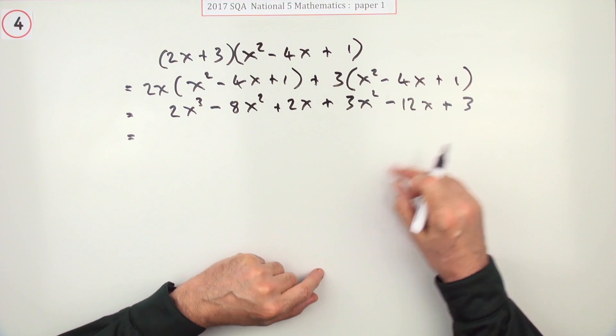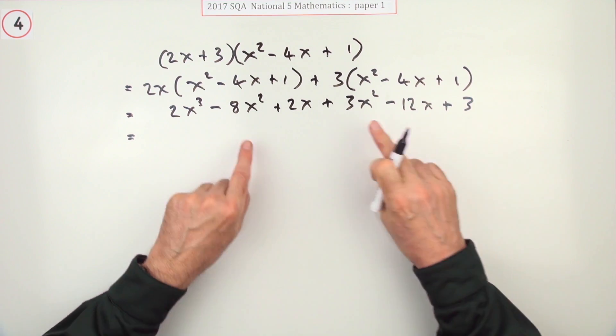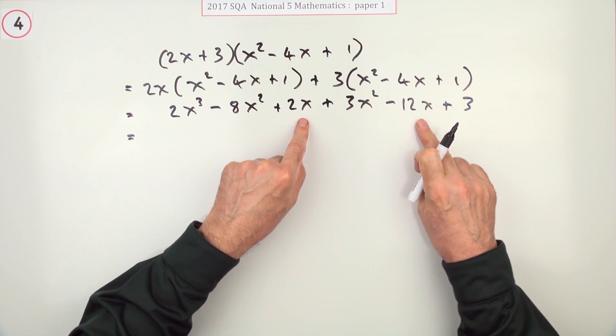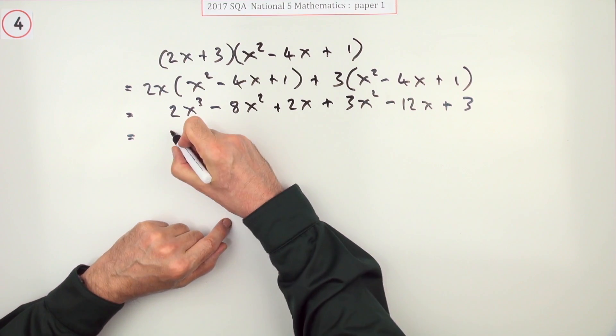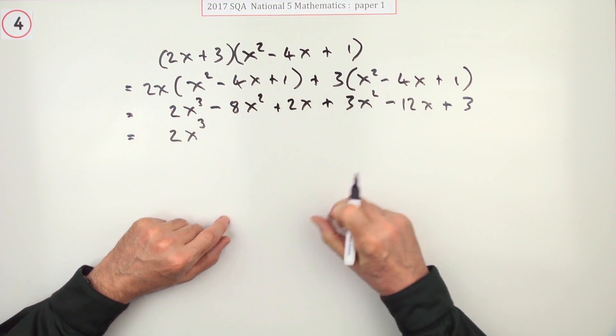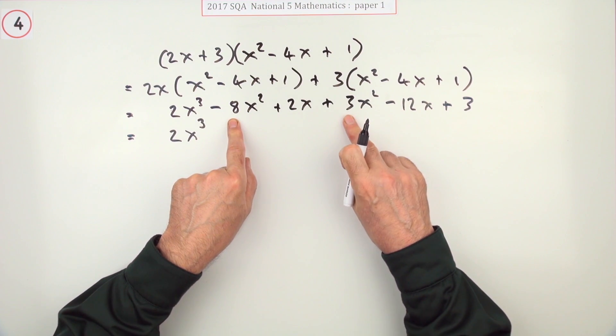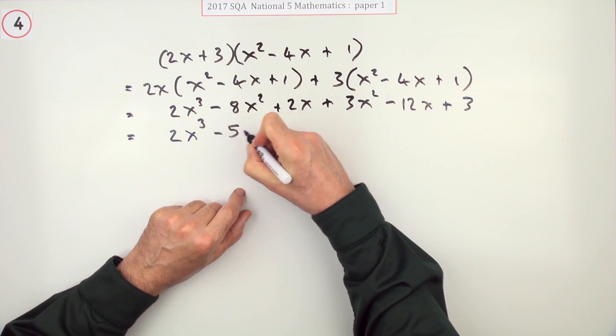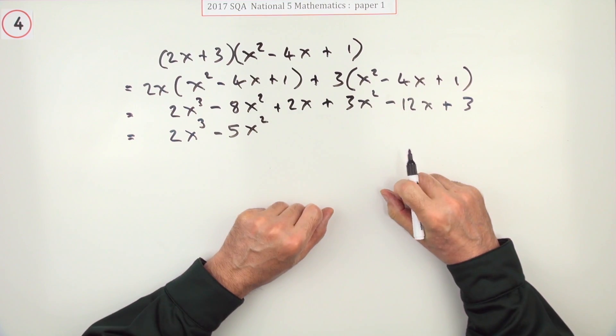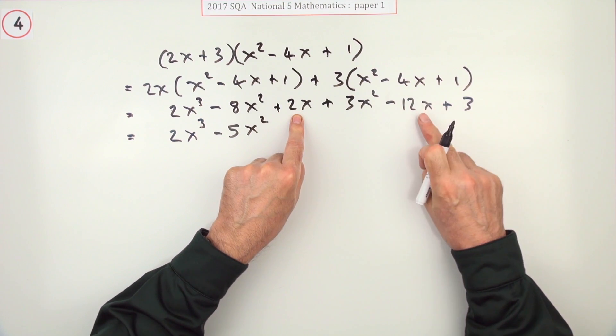Now let's gather them up. Only one thing says x³, only one thing's just a number, but there's two that say x² and two that say x. So there's only one thing that said x³, there's two parts that say x² minus 8 plus 3, so that's minus 5 altogether. There's two things that say x, 2x minus 12x, that's minus 10x altogether.